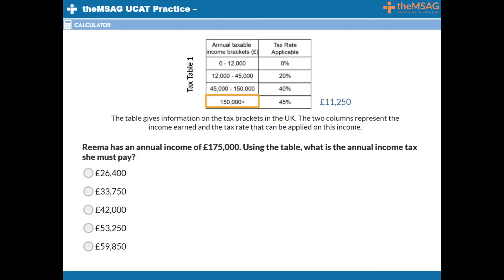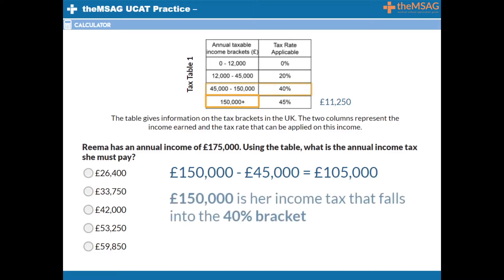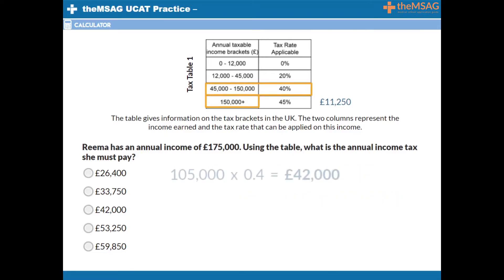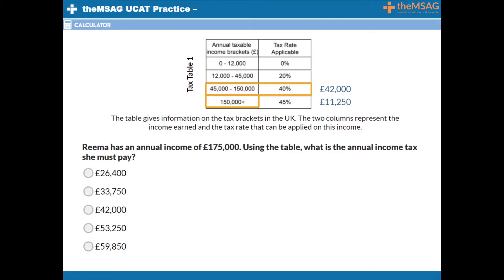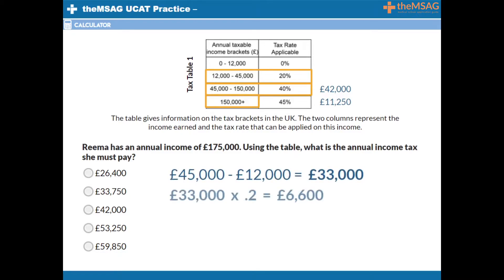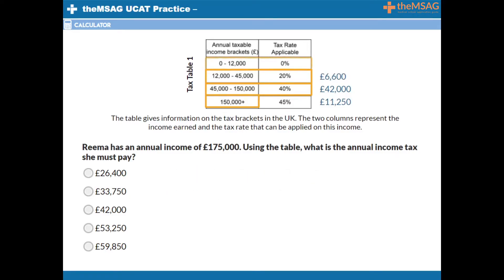This is simpler than it sounds. Just work out the difference — for example, between £45,000 and £150,000 which equals £105,000. This is how much of her income falls into the 40% bracket. £105,000 times 0.4 is £42,000 more tax to pay. Use the same technique for her income between £12,000 and £45,000. £45,000 minus £12,000 equals £33,000. £33,000 times 0.2 is £6,600. Her first £12,000 of income fell into the 0% tax bracket so she pays 0% income tax on it.